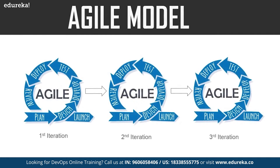The next model is the agile model. In this model, the software is broken down into various iterations, each with phases such as planning, design, development, and so on. The duration of each iteration is generally two to eight weeks. In the agile model, you release the software in the first iteration, gather feedback from end users, incorporate those changes into the second iteration, release again, and repeat the procedure for subsequent iterations.